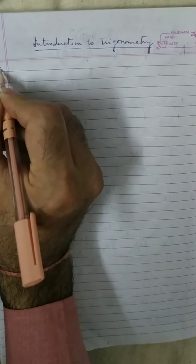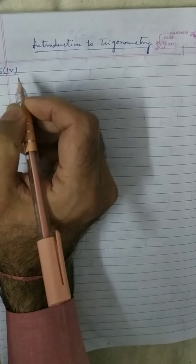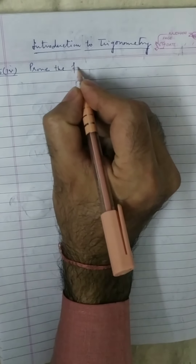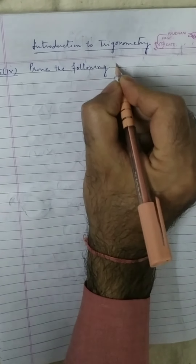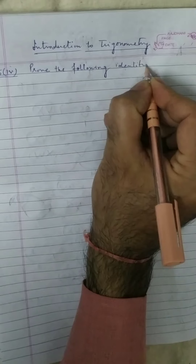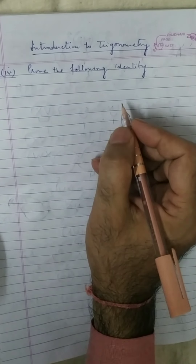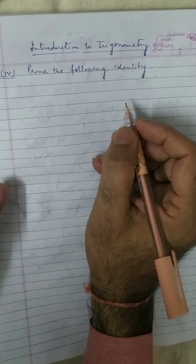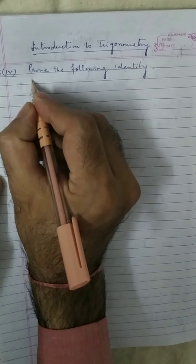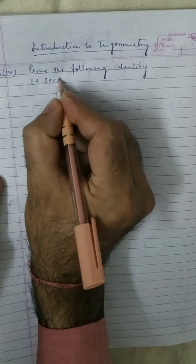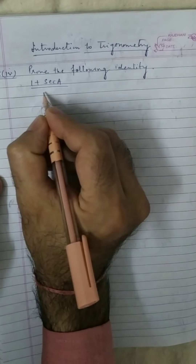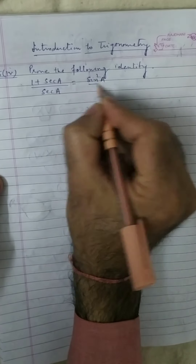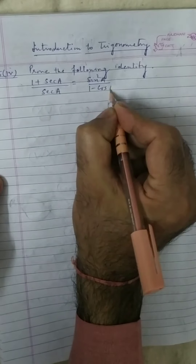Question 5, part 4. Prove the following identity, where the angles involved are acute angles for which the expressions are defined. The question is: 1 plus secant a upon secant a is equal to sin square a upon 1 minus cos a.